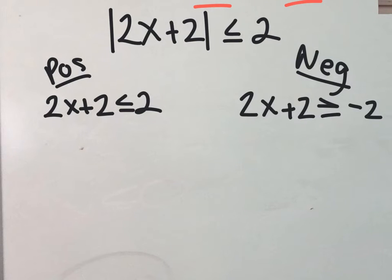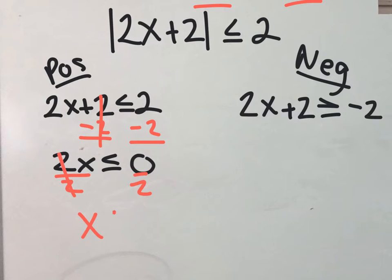Okay, so now step 3 is to solve. Let's solve one at a time. I want to solve the positive situation by subtracting 2, cancel, subtract 2. Hey, 2 take away 2 is nothing. So 2x is less than or equal to nothing, to 0. 0 is a number. So let's keep working. We're going to divide by 2. Divide by 2. 2x is less than or equal to nothing, 0. That is an answer.